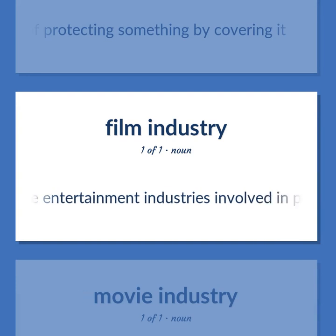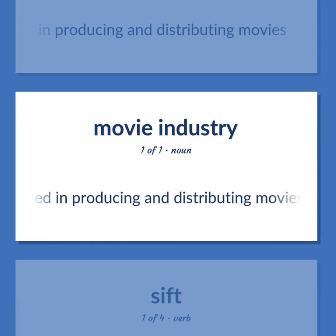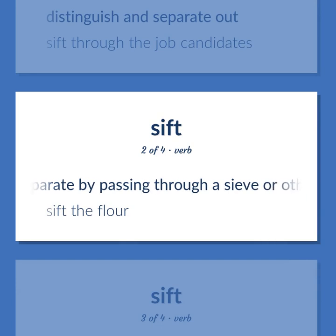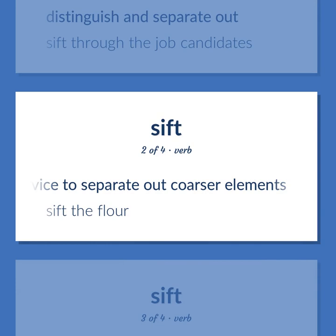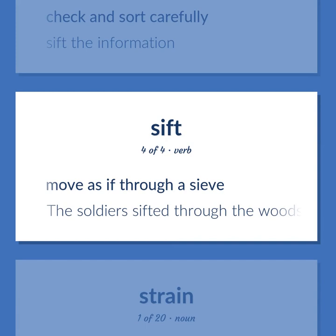The entertainment industries involved in producing and distributing movies. Distinguish and separate out. Sift through the job candidates. Separate by passing through a sieve or other straining device to separate out coarser elements. Sift the flour. Check and sort carefully. Sift the information. Move as if through a sieve. The soldier sifted through the woods.